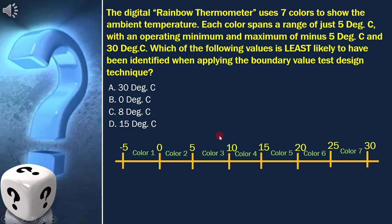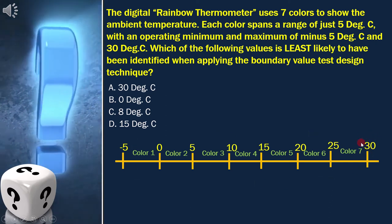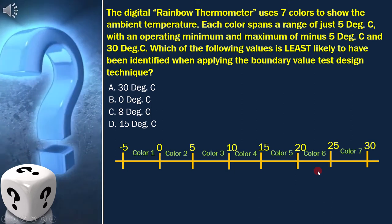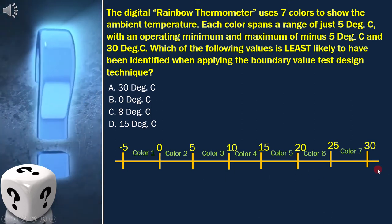Now you can see, from minus 5 to 30, we have 7 color bands. With this, the boundary value analysis diagram is ready.